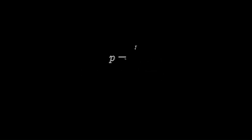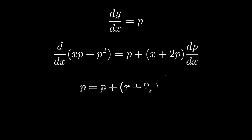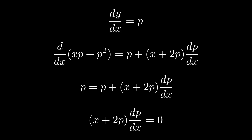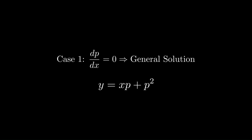Next is the Clairaut ODE. It's a bit different from all the other ODEs and a bit simpler. The concept is to separate this ODE into two separate solutions set equal to zero. After substituting p = dy/dx, we have (x + 2p) · dp/dx = 0, giving us two cases.